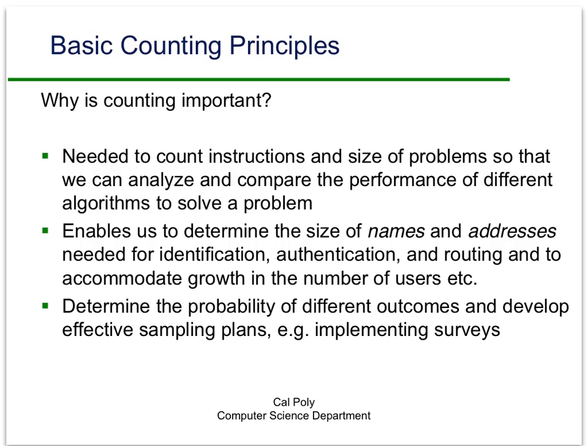Another application that crops up a lot — generally it's a little simpler to analyze — is determining the size of the address space or the name space that's needed for identification or authentication of a system. You can think of telephone numbers as a simple example of an address space that's been around for a long time and has served pretty well. Finally, another application that commonly comes up is determining the probability of different outcomes and determining how many people you need to sample for a given survey to get validity.